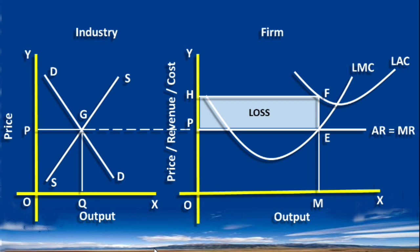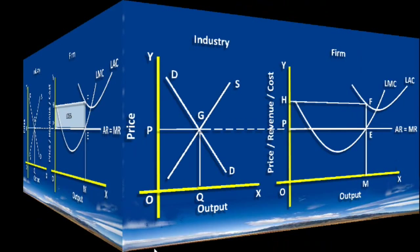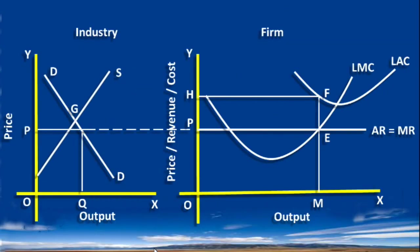When this is the condition in the perfectly competitive industry, some of the firms will leave the industry. The immediate effect is a shift of the supply curve to the left — that is, a decrease in supply. As a result, the price goes up.